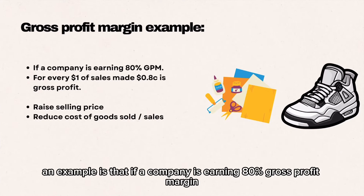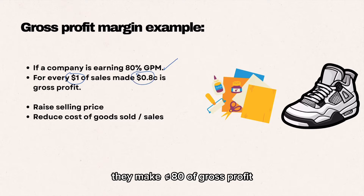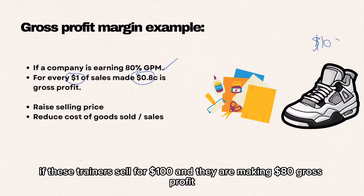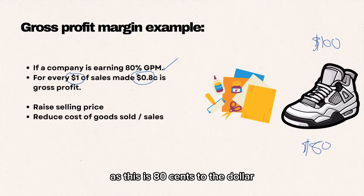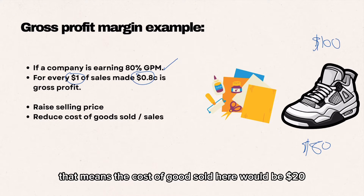An example is that if a company is earning an 80% gross profit margin, this means that for every $1 of sales, they make $0.80 of gross profit. For instance, if these trainers sell for $100 and they are making $80 gross profit, that means the cost of goods sold would be $20.